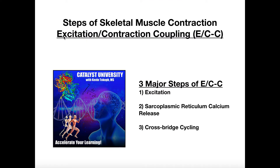We'll begin with initial excitation via the motor neuron that innervates that particular muscle fiber or muscle cell, and then end with the ultimate contraction of the sarcomere — sarcomere shortening. Typically, these two major events are termed together: excitation-contraction coupling.